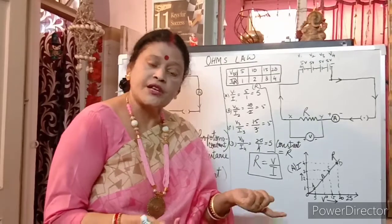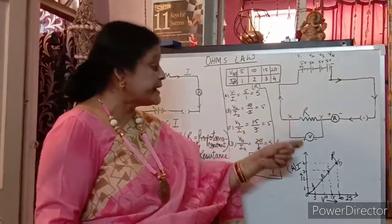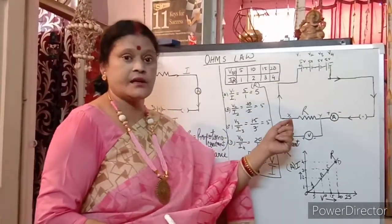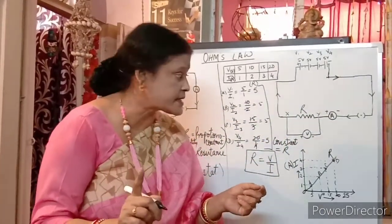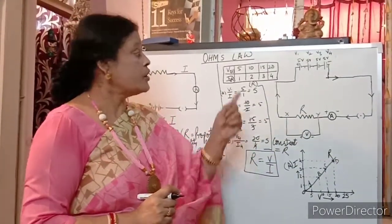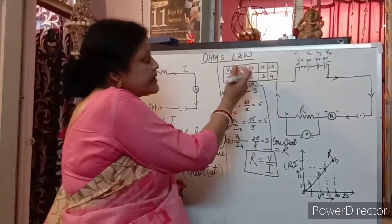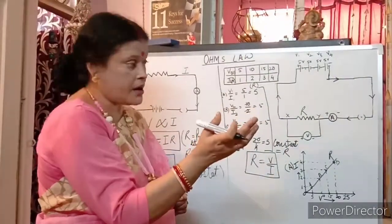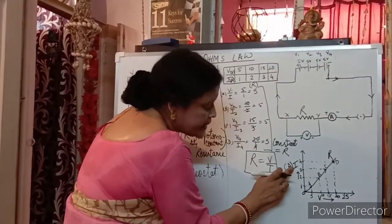That is exactly what Ohm's Law says — potential difference is directly proportional to current. We observed this in our experiment readings. If you change the temperature, your readings will fluctuate, which is why we keep temperature constant. Otherwise the voltmeter and ammeter readings will have reflection problems. All readings increased at equal intervals.